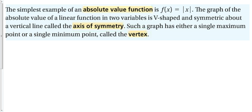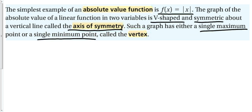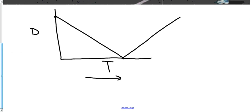Some vocabulary. The simplest form of an absolute value function is the parent function: f(x) = |x|. The graph of an absolute value linear function in two variables is V-shaped. It is symmetric about a vertical line called the axis of symmetry, which can help us graph an absolute value equation. This graph also has either a single maximum or a single minimum point called the vertex.